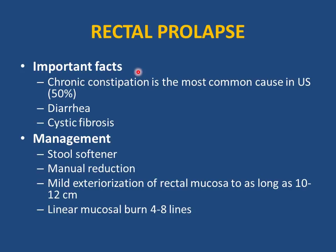Rectal prolapse: the most common cause in the US is chronic constipation due to straining. Diarrhea can also be associated. If a child presents with rectal prolapse and failure to thrive, the most likely cause is cystic fibrosis. Management: stool softeners, manual reduction. Mild externalization of rectal mucosa up to 10-12 cm heals by contraction and fibrosis, shortening the lax tissue. Linear mucosal burns in 4-8 lines also heal with contraction to shorten lax tissue.